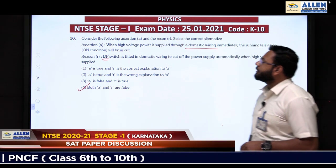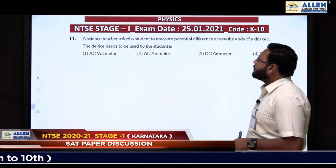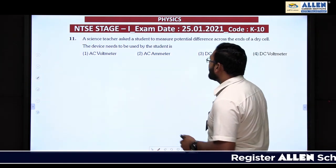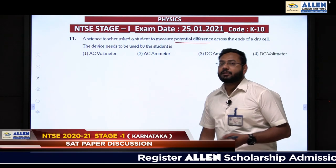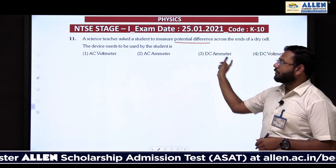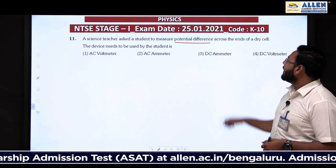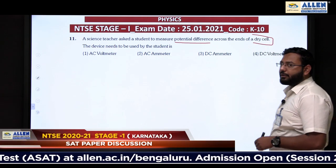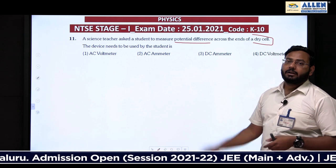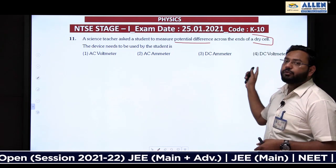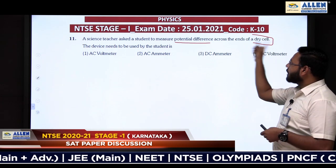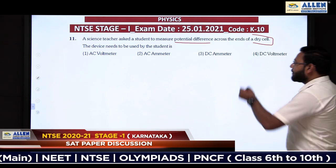Question 11: A science teacher asks a student to measure potential difference across the ends of a dry cell. To measure potential difference, we use a voltmeter. Since a dry cell is a source of DC supply (direct current), we need a DC voltmeter. Ammeters measure current, so those options are wrong. Option 4, DC voltmeter, is correct.